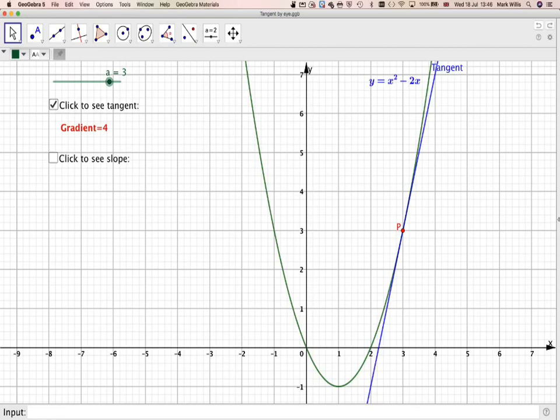And then what you do to calculate the gradient of the curve, you use the change in Y divided by the change in X. So it's going to be, this distance is 4 divided by 1, which gives a gradient of 4. So that's how you actually do it.